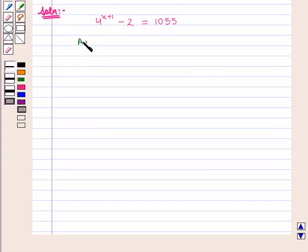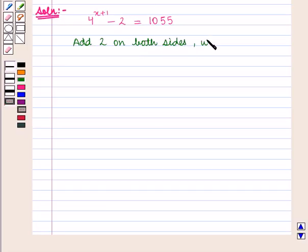First we add 2 on both sides of the equation. We get 4^(x+1) - 2 + 2 = 1055 + 2.